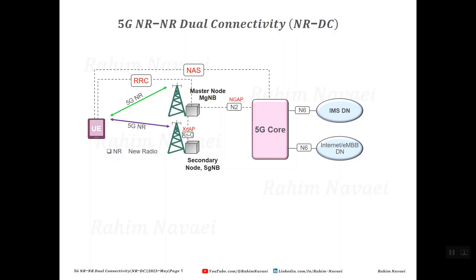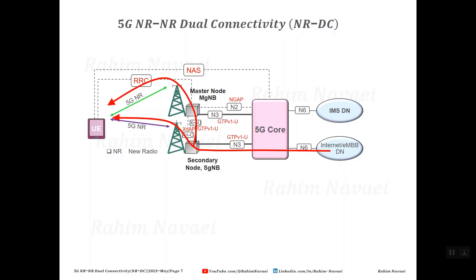The master node and secondary node exchange signaling using XN application protocol (XNAP) via the XN interface. From the user plane point of view, the secondary node terminates the user plane from the 5G core via the N3 interface and has a user plane connection to the 5G device both directly and via the master node using the XN-U interface. Additionally, the device may simultaneously have a user plane connection to the 5G core via the master node for bearers which cannot be terminated on the secondary node, for example IMS signaling and IMS voice bearer.